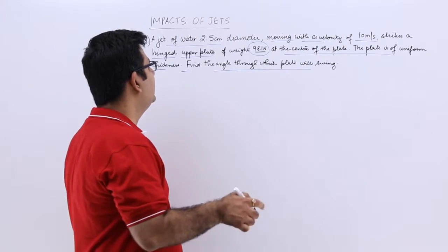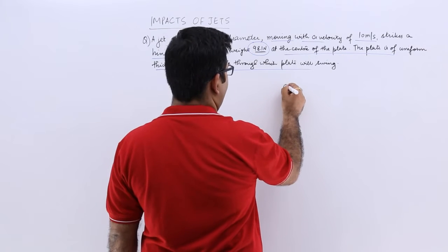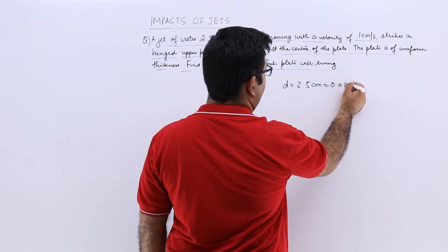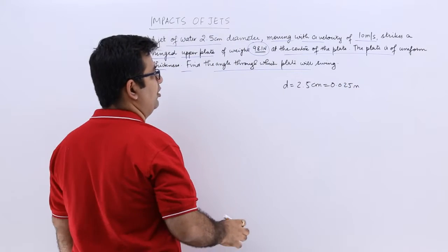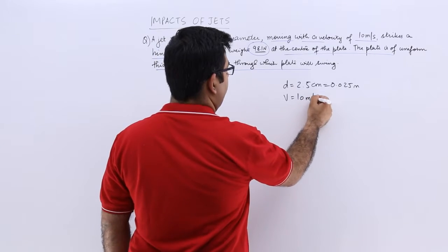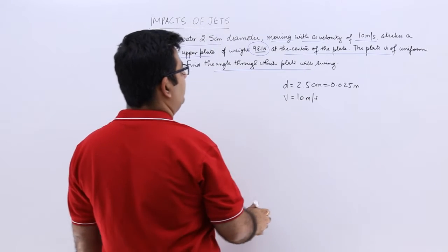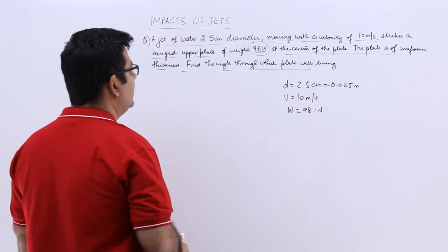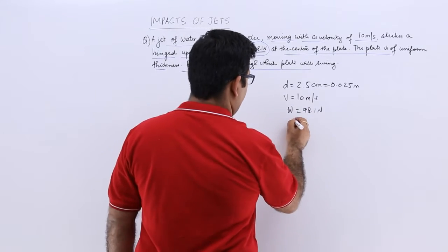So the data is that the diameter of the water jet is 2.5 centimeters. In meters it would be 0.025 meters. The velocity is given to you as 10 meters per second. The weight of the plate W is 98.1 newtons and we have to find out theta.